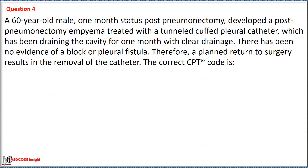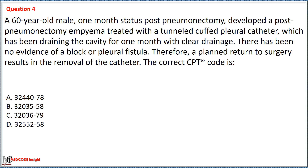A 60-year-old male, one month status post-pneumonectomy, developed post-pneumonectomy empyema treated with a tunneled cuffed pleural catheter, which has been draining the cavity for one month with clear drainage. There is no evidence of bronchopleural fistula, so a planned return to surgery results in removal of the catheter. The correct CPT code is: Option A: 32440 with modifier 78. Option B: 32035 with modifier 58. Option C: 32036 with modifier 79. Option D: 32552 with modifier 58.